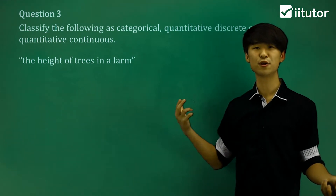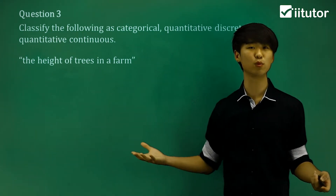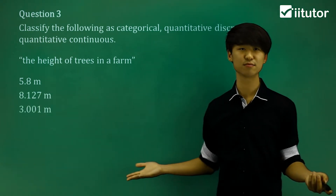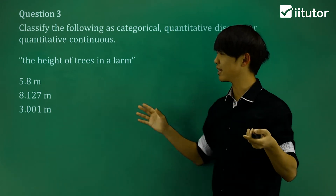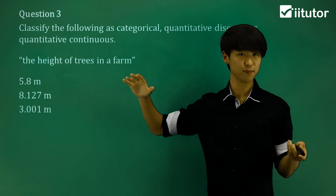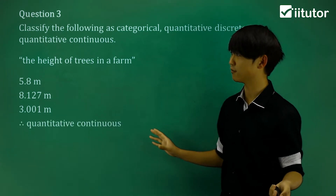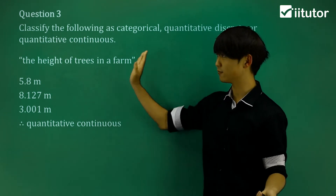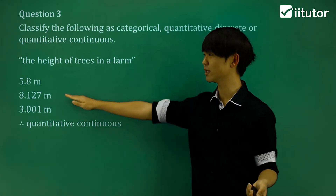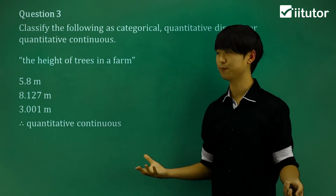Question three: the height of trees on a farm. If you're looking at height, we're talking about length — so 5.8 meters, 8.127 meters, or 3.001 meters. There's going to be some exact height of the tree, and it's not going to be a set whole number like before. This is what we call a quantitative continuous variable. The key difference is that with continuous, we can have an exact value, as opposed to just having set whole values like 8, 9, 10, and so on.